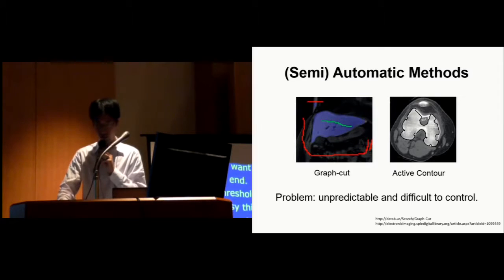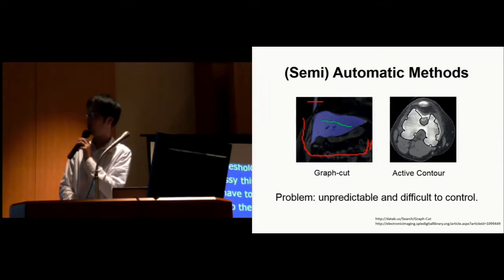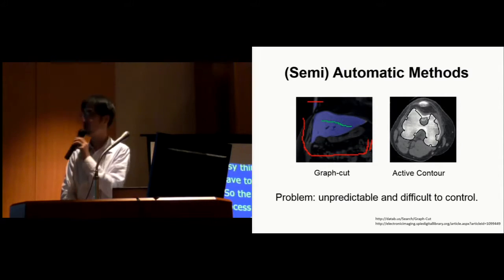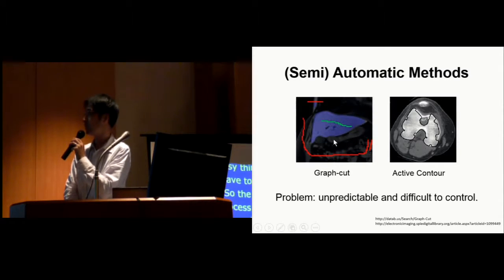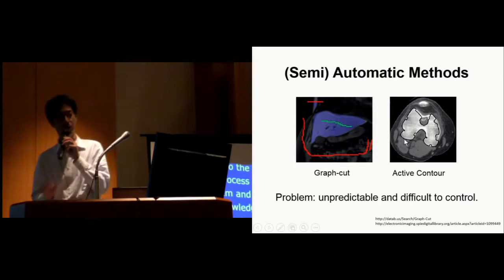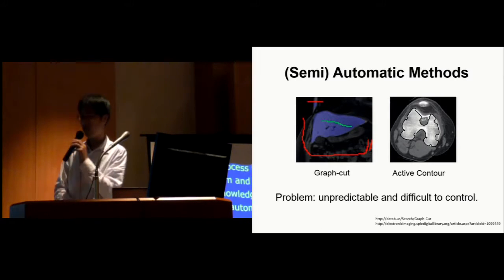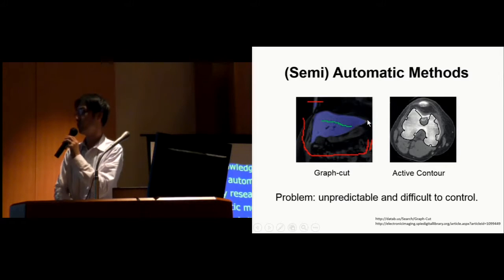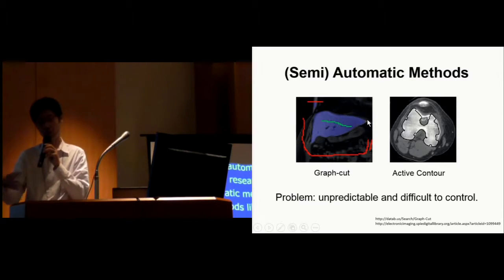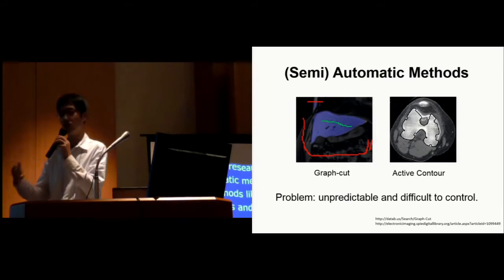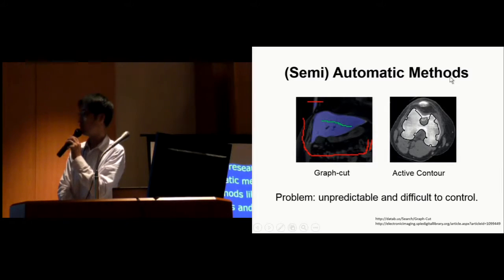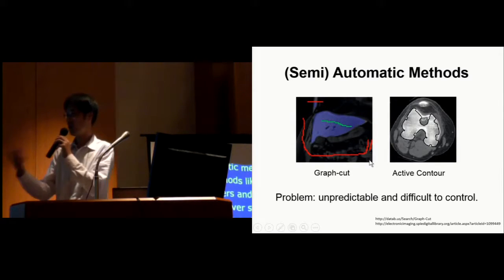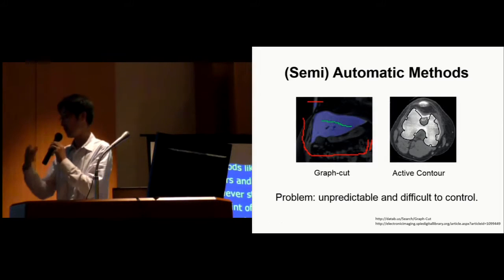There are many research into automating this, like automatic methods or semi-automatic methods, like graph cut or active contours, and many advanced methods. However, still, from a practitioner's point of view, at least the people I talk to, they say that this method works fine. If it works fine, it's very good. But if it fails, it's very difficult to control, and it's very difficult to understand the relationship between input parameters, many parameters, and the output.